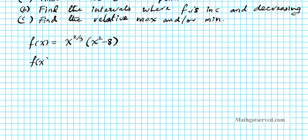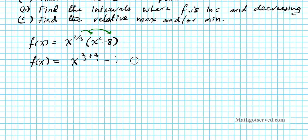So we are going to distribute x^(2/3) to the two terms in the parenthesis. Using the law of exponents, whenever you multiply you add the exponents. So you are going to have x^(2/3 + 2/1), we are adding those exponents, minus 8 times x^(2/3). Let's rewrite that properly — this gives us x^(8/3) minus 8x^(2/3).